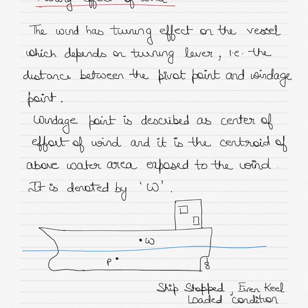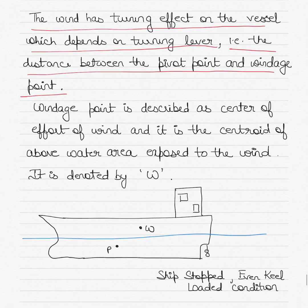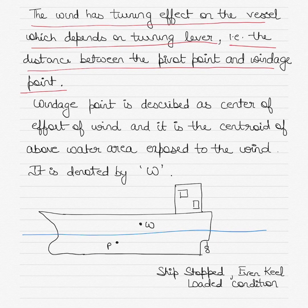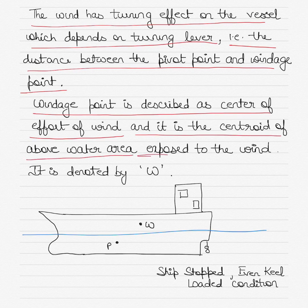The wind has a turning effect on the vessel which depends on the turning lever. The turning lever is the distance between the pivot point of the vessel and the windage point. The pivot point is the point about which a ship turns; it is normally located one third of the ship's length from the forward when the ship is going ahead. The windage point is described as the center of effort of the wind and it is the centroid of the above water area that is exposed to the wind.